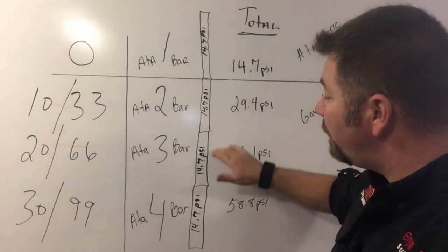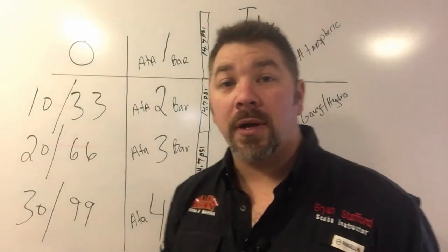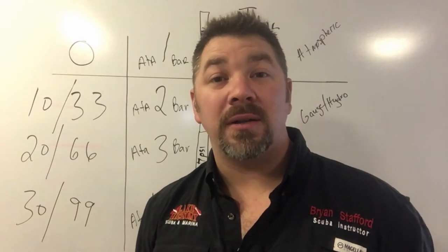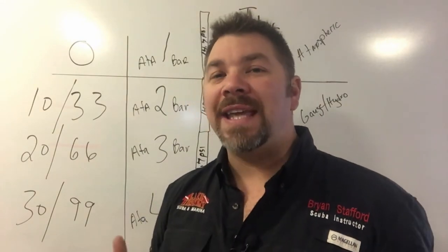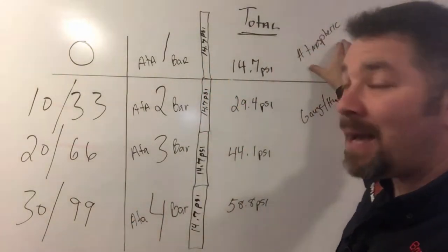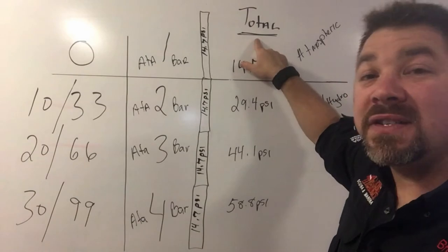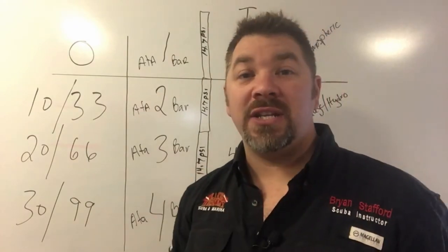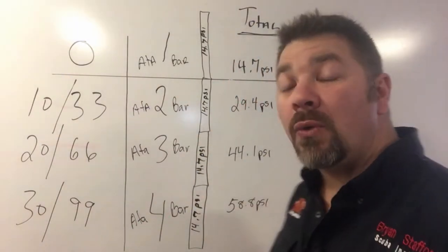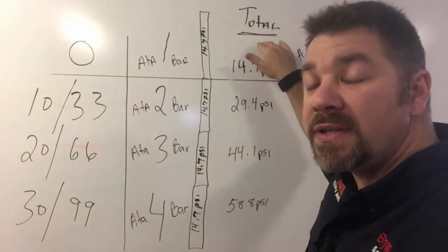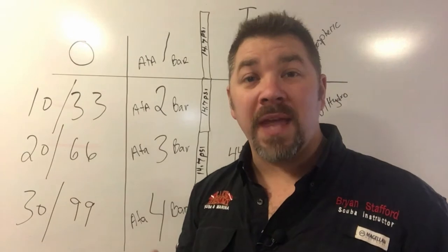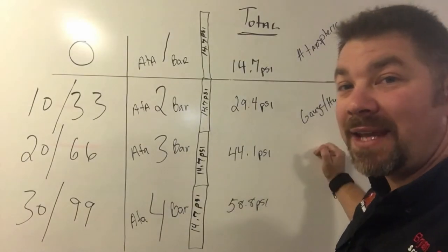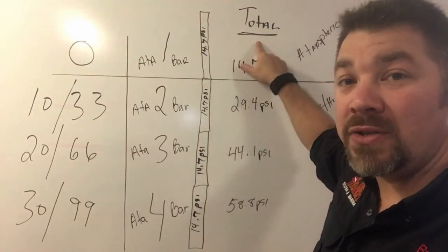That additional 14.7 psi doesn't get rid of the initial 14.7 psi at the surface — the atmospheric pressure. We constantly have to add those together. If we simply take atmospheric pressure and add it to gauge pressure, that gives us the total pressure. Atmospheric pressure never changes; it's constant. Gauge or hydrostatic pressure changes depending on your depth, but the initial 14.7 psi from the atmosphere is always there. Atmospheric plus gauge equals total pressure.